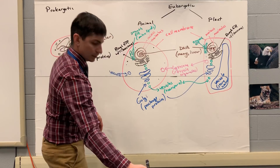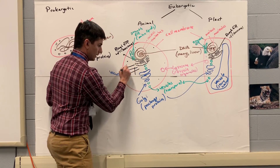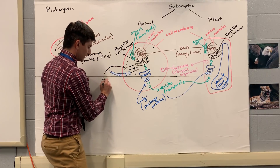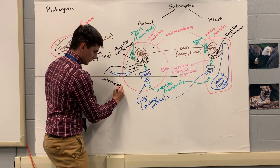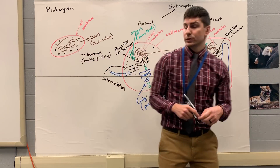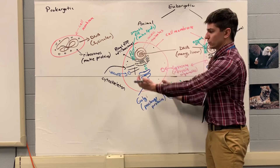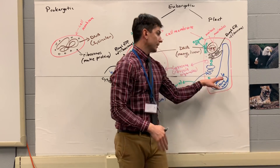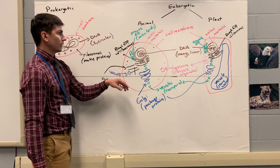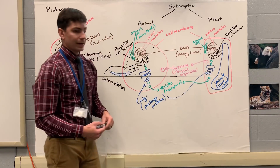For animal cells, we are going to have a cytoskeleton, made of different proteins — microfilaments and microtubules. The cytoskeleton is essentially the skeleton of the animal cell; it makes sure it has a nice round structure. Plant cells don't have a cytoskeleton because they have the vacuole. So to maintain cell structure: for animal cells it's the cytoskeleton, for plant cells it's the vacuole.